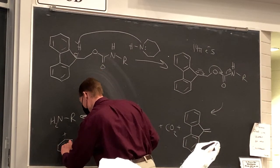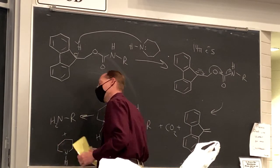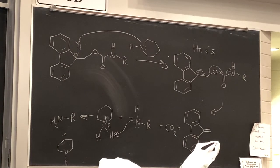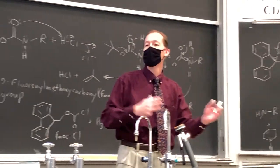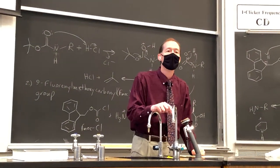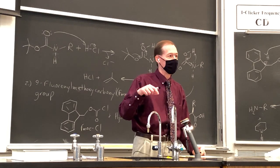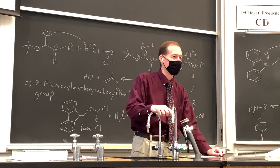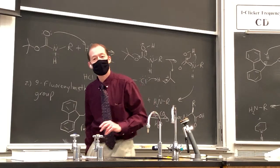Whereas a BOC group is stable to base and cleaved with acid, an FMOC group is stable to acid and cleaved with base — so these are complementary protecting groups. At the beginning of class on Wednesday we'll teach you a third protecting group for amines, and then we'll jump into carboxylate protecting groups. Make sure you work on that synthesis assignment.